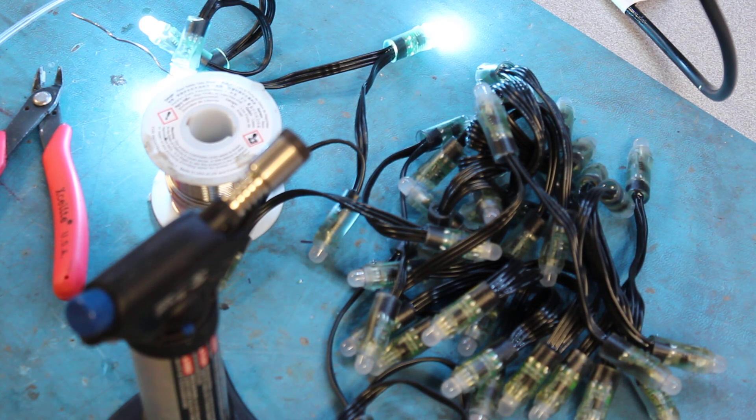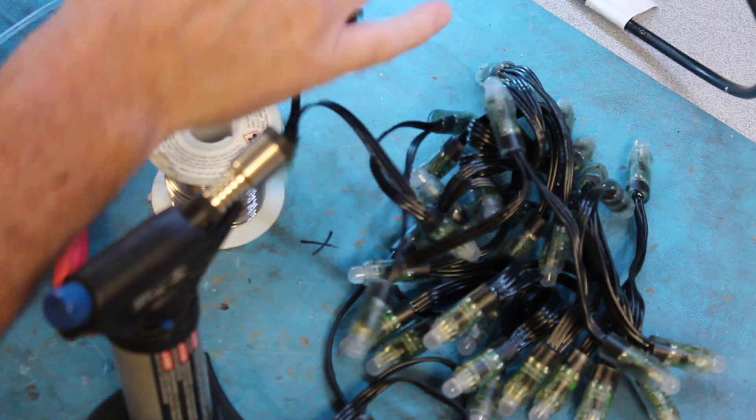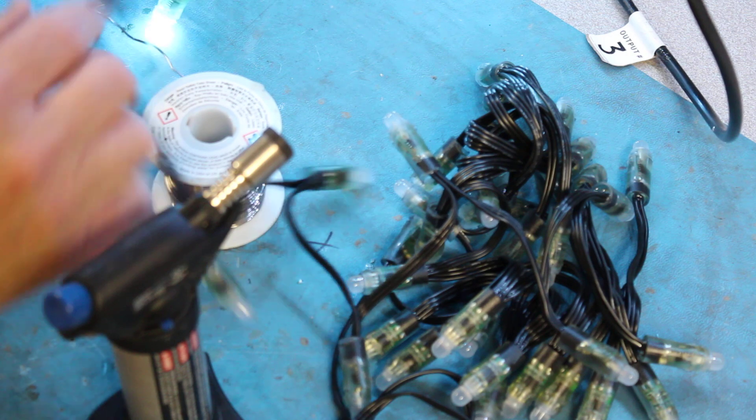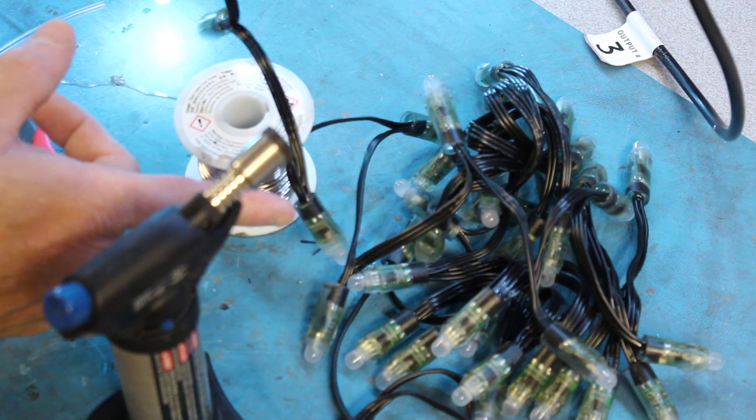This video explains how to fix a mid-span break in pixel strings. For example, in this particular case, we have a string of lights that's powered up, and we have a pixel that works, and then the remaining pixels don't work.